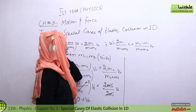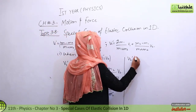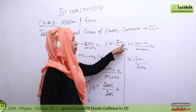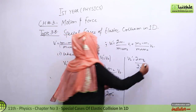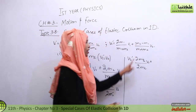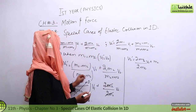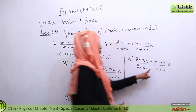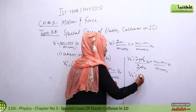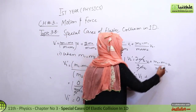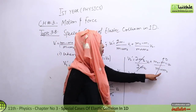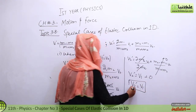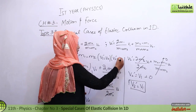Now let's solve for v2'. Substituting m2 for m1, we get 2m2 in the numerator. The denominator is m2 plus m2 equals 2m2. So 2m2 over 2m2 cancels, and we get v1. The second term has m2 minus m2, which is zero, making that whole term zero. Therefore, v2' is equal to v1.